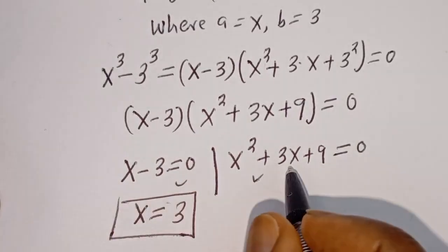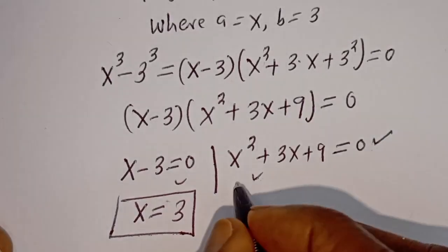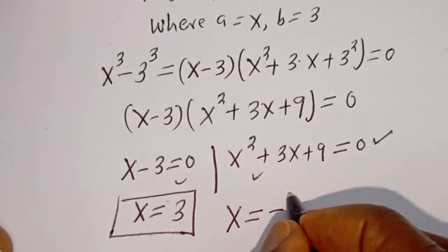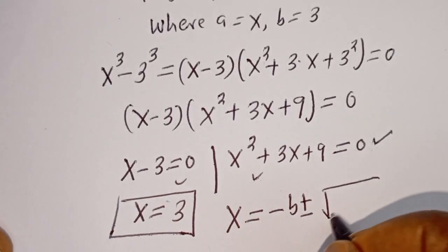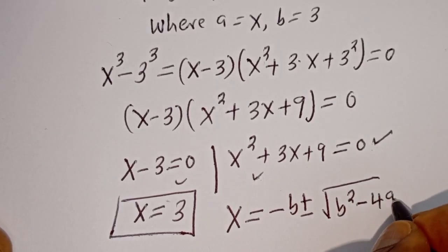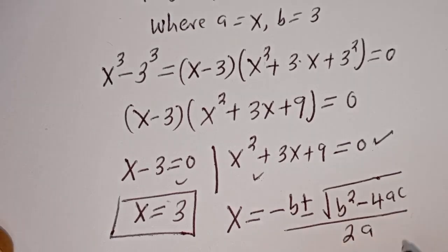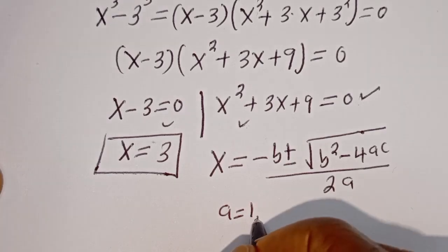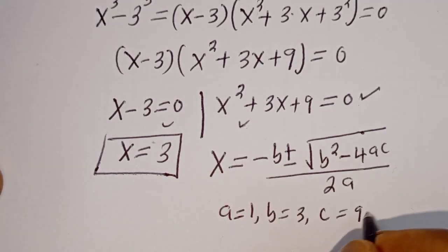From here we can solve the second case using the quadratic general formula, because this is a quadratic equation. Our quadratic general formula is given as s is equal to minus b plus or minus square root of b squared minus 4AC, divided by 2A. From this equation, A is equal to 1, B is equal to 3, C is equal to 9.